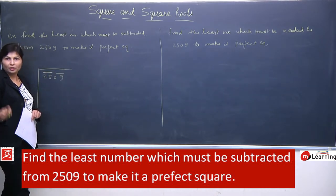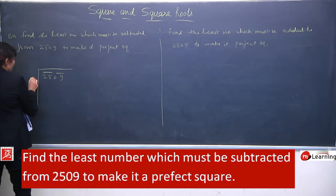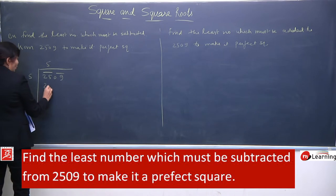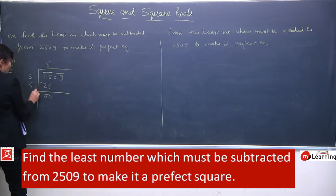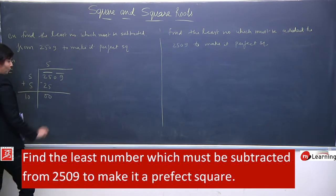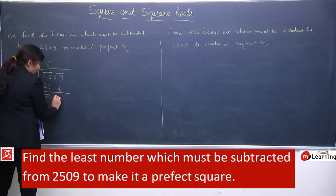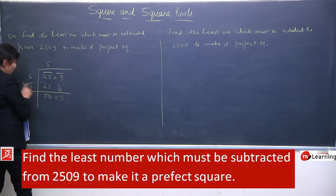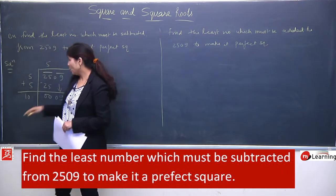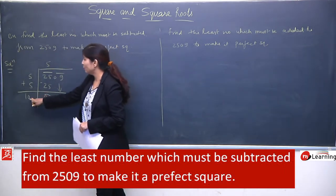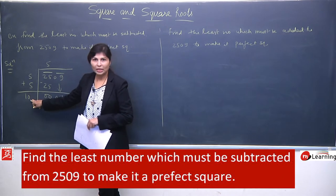Root find karne ke liye toh hume itna karna hi hoga. Ab hum yahan aisa number choose karenge - 5, 5 is a 25. Remainder 0 aa gaya. 5 humne immediately add kar diya, 10 ho gaya. Pair copy kiya, pair is 09. Obvious hai, yahan 10 hai aur 9 hai, means hum yahan kuch bhi lenge toh wo solve nahi hoga, because this is very very less as compared to this.